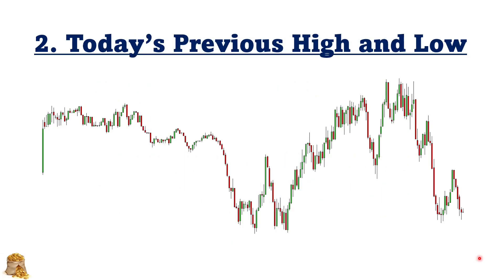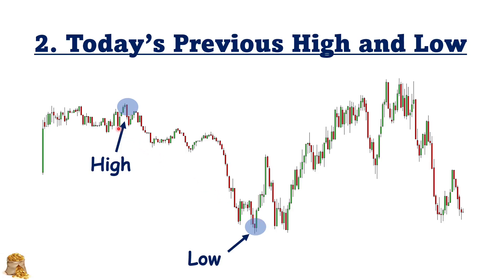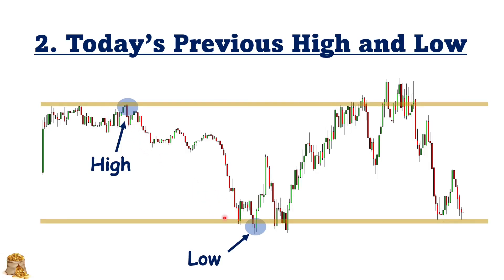We can also use today's previous high and low as the support and resistance levels. The market opens and then goes up, makes a high, and then goes down, makes a low. Then we can draw horizontal levels on the high and the low. We can see the market later goes up to retest the highs and also goes down to retest the low. So today's previous high and low can serve as the support and resistance levels.